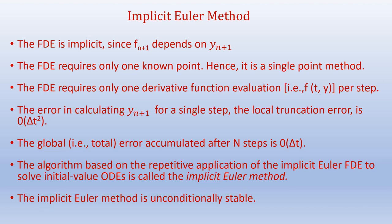The error in calculating y n plus 1 for a single step, the local truncation error, is of the order of delta t squared. The global error — that is, the total error accumulated after n steps — is of the order of delta t. This is the same global error as in the explicit Euler method. The algorithm based on repetitive application of this implicit Euler FDE is called the implicit Euler method, and the implicit Euler method is unconditionally stable.